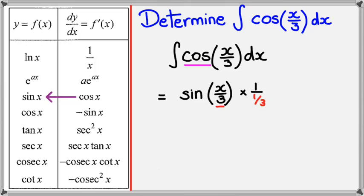Simplifying this, I know that 1 divided by 1 third is 3. So I'm going to have sine x over 3 multiplied by 3.